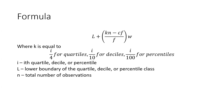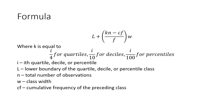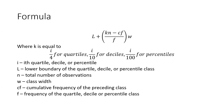N is the total number of observations. W is the class width. CF is the cumulative frequency of the preceding class. F is the frequency of the quartile, decile, or percentile class.